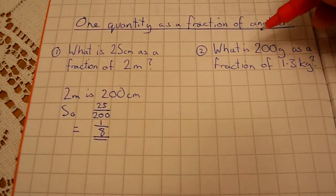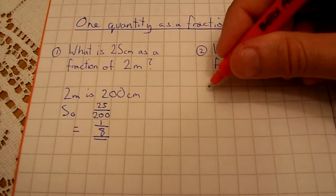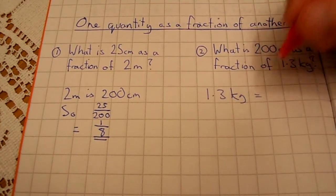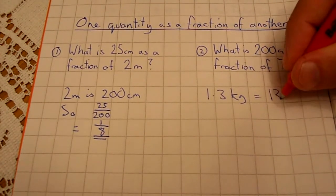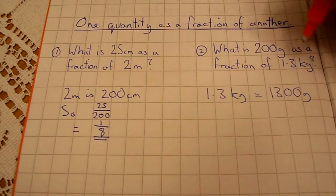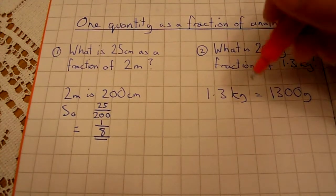Looking at example 2, what is 200 grams as a fraction of 1.3 kilograms? Well, remember that 1.3 kilograms equals 1,300 grams. Write 200 as a fraction of 1,300 grams.